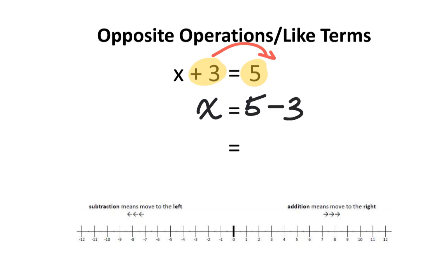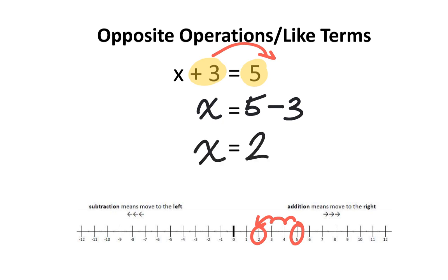This next step should be pretty straightforward. Looking at your number line, you start with the number positive 5, and you're going to subtract 3 from it — 1, 2, 3 — which means you're moving 3 spaces to the left, and you end up at the number positive 2. Therefore, x is equal to positive 2.